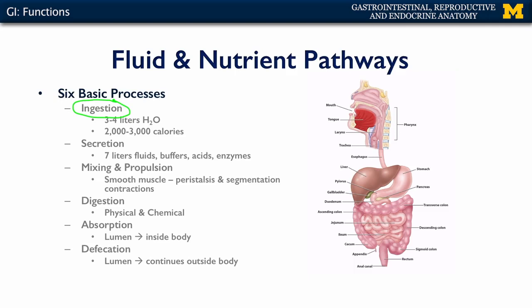This comes in through the mouth typically, and your GI system is then going to secrete its own fluid into the lumen. So we go from a process of ingestion to secretion. There is also the mixing and propulsion of the materials within the lumen, and the goal here is to bring as much of the contents of the ingested materials into contact with the various chemicals and materials secreted by the GI system.